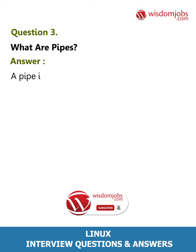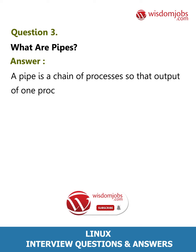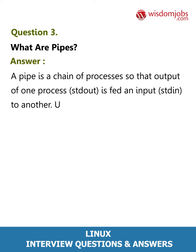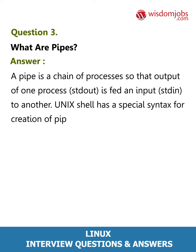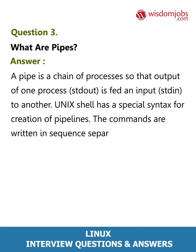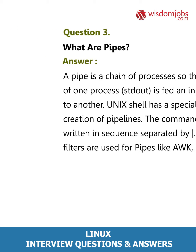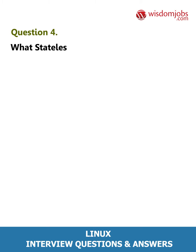Question 3: What are pipes? Answer: A pipe is a chain of processors so that the output of one process (stdout) is fed as input (stdin) to another. Unix shell has a special syntax for creation of pipelines. The commands are written in sequence separated by filters used for pipes, like '|' or grep.